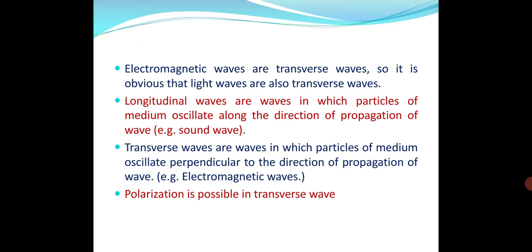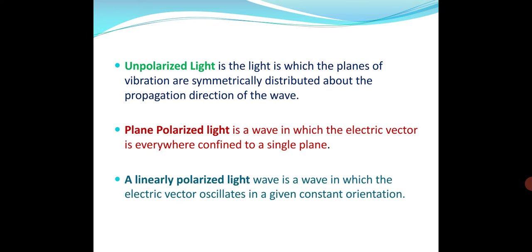There are different types of waves. In longitudinal waves, vibrations of the particles are oscillating parallel to the direction of propagation — just like sound waves and mechanical waves. In transverse waves, the examples are light waves and all electromagnetic waves. Polarization is possible only in transverse waves.